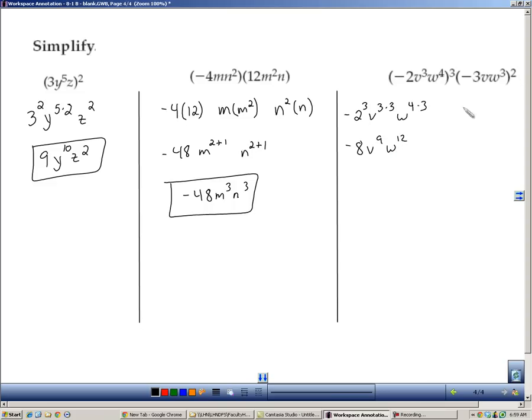Now we'll deal with this one over here. Bring the 2 into everything. Negative 3 squared, v to the 1 times 2, and w to the 3 times 2. Because when you take a power to another power, you multiply. So this will be a positive 9, a v squared, and a w to the sixth. And now we'll multiply these two monomials. Negative 8 times 9, v to the ninth times v squared. When you multiply bases that are the same, you add those exponents. And then w to the twelfth plus 6. Negative 72, v to the eleventh, and w to the eighteenth.